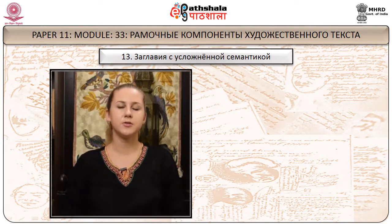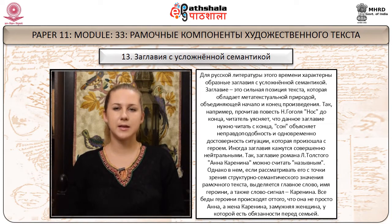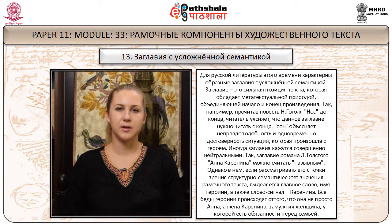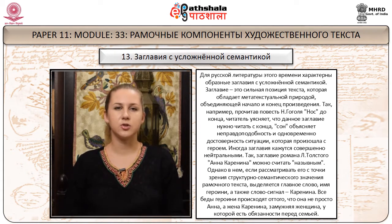Заглавия с усложнённой семантикой. Для русской литературы характерны образные заглавия с усложнённой семантикой. Заглавие – это сильная позиция текста, которая обладает метатекстуальной природой, объединяющей начало и конец произведения. Так, прочитав повесть Гоголя «Нос» до конца, читатель уясняет, что данное заглавие нужно читать с конца. Сон объясняет неправдоподобность и одновременно достоверность ситуации, которая произошла с героем.